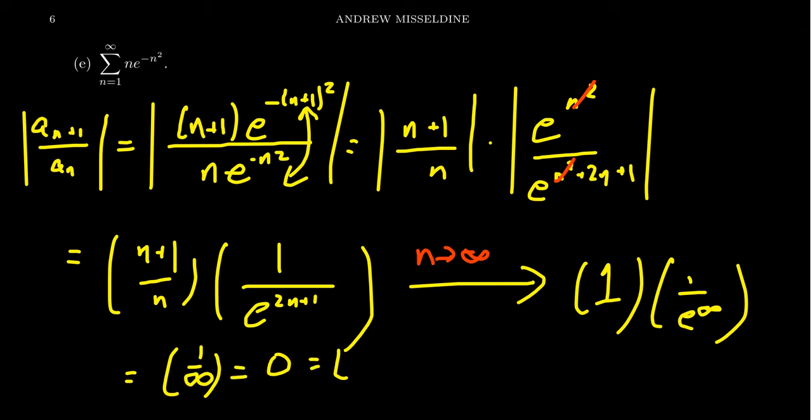This is the limit of the ratio sequence. Now, by the ratio test, we want to compare this limit to the number 1. If it's less than 1, like we see right here, then that actually tells us that the series is convergent. But also, we get the benefit of saying it's actually absolutely convergent.